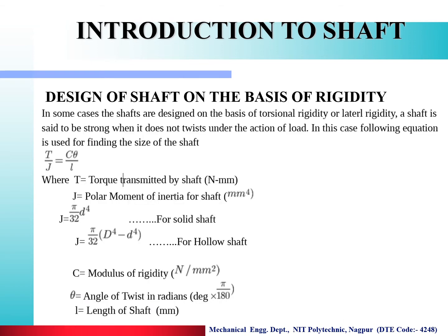Now we see the design of shaft on the basis of rigidity. This is the torque equation: T/J = Cθ/L, where T is the torque transmitted by the shaft in Nm; J is the polar moment of inertia, equal to π/32 × d⁴ for a solid shaft, and π/32 × (do⁴ − di⁴) for a hollow shaft; C (or G) is the modulus of rigidity in N/mm²; θ is the angle of twist in radians — if given in degrees, multiply by π/180; and L is the length of the shaft in mm. In this way, we can design the shaft on the basis of rigidity.